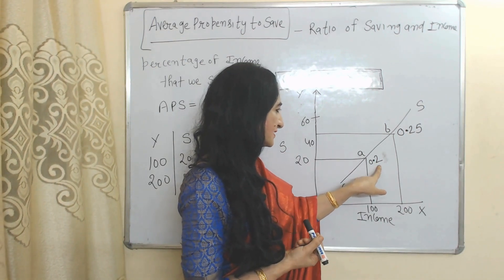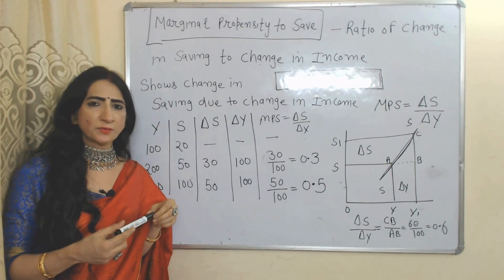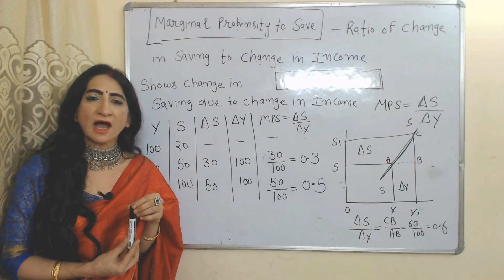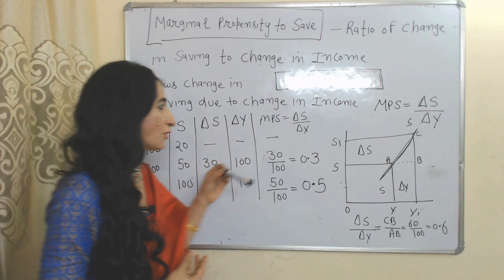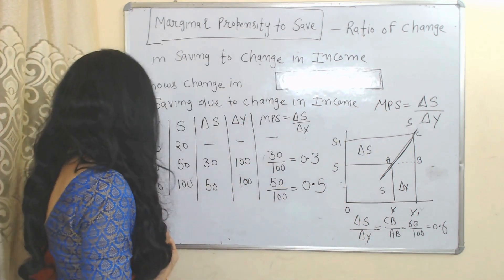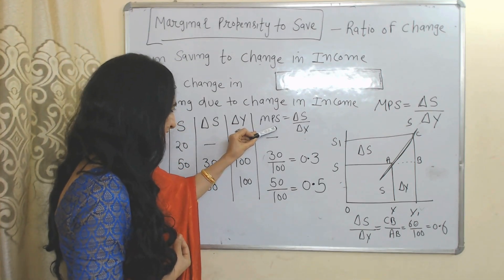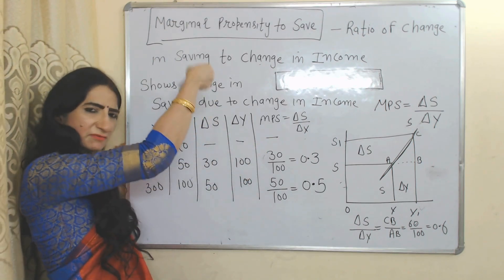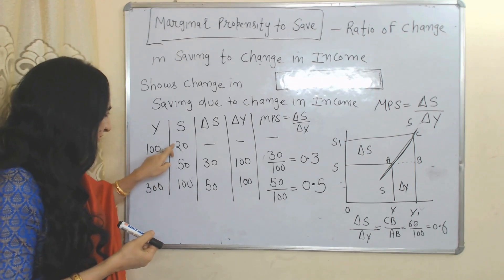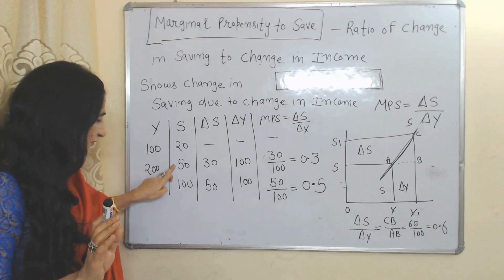On the graph, x-axis is income and y-axis is saving. The SS curve shows the saving function. At point A, APS is 0.2, and at point B, APS is 0.25. Now we will see the marginal propensity to save (MPS). MPS is the ratio of change in saving to change in income — it shows how much saving changes due to a change in income. The formula is delta S over delta Y. Initially we put a dash because we don't know the previous year's saving and income. Current saving is 50, previous saving is 20, so 50 minus 20 equals 30 — this is the change in saving.